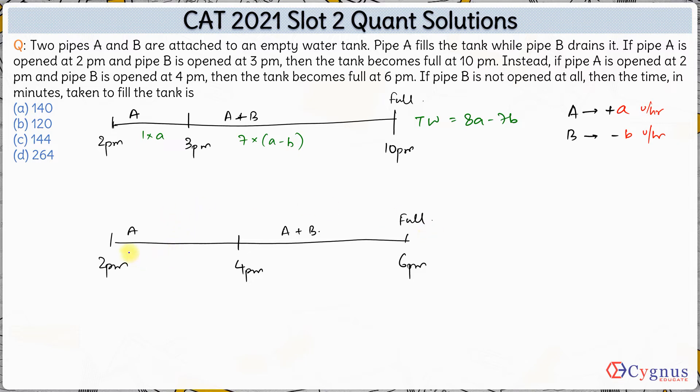Now total work done in the second case is A is working alone for 2 hours at an efficiency of A. A and B together are working for the next 2 hours, so twice of A minus B. So the total work done in this case is 2A plus 2A, which is 4A minus 2B.